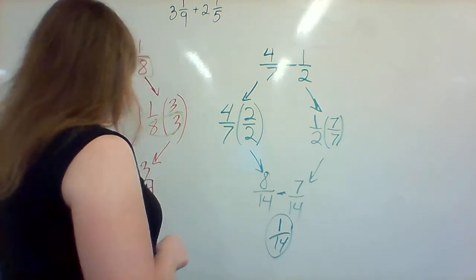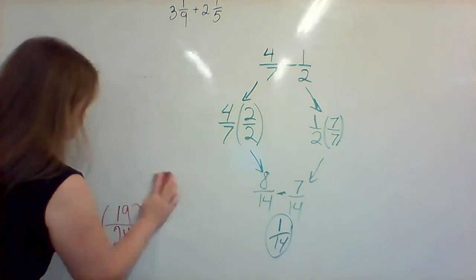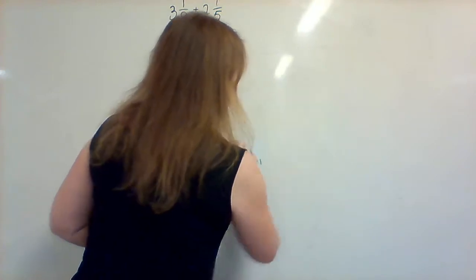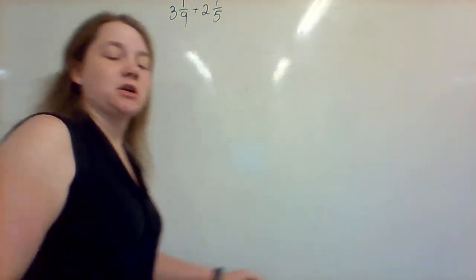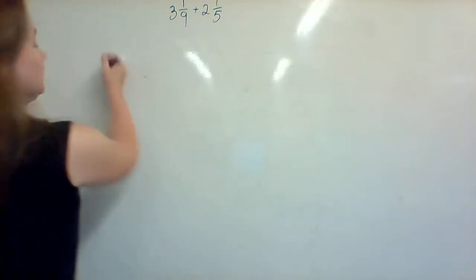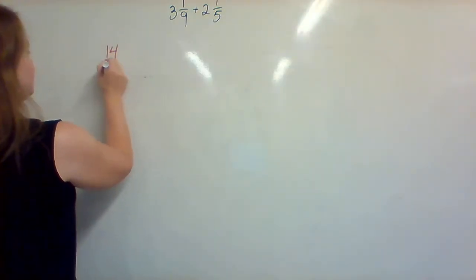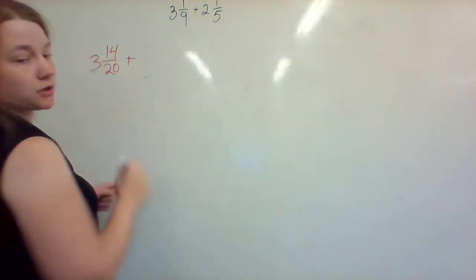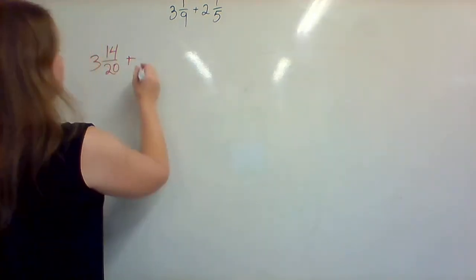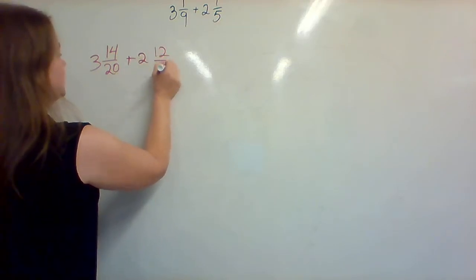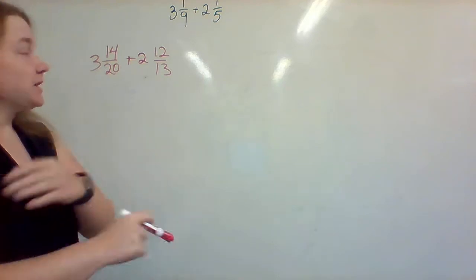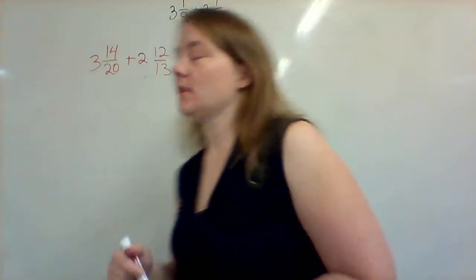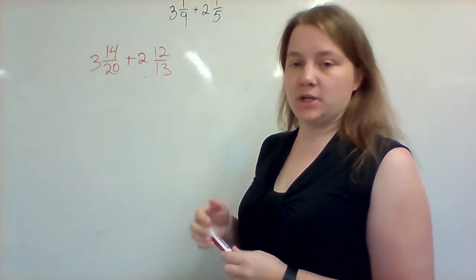Now we're going to look at 2 more examples. I'm going to start off this first example with something a little bit bigger. I'm going to start off with 3 and 14 over 20 plus 2 and 12 over 13. A couple things going on here. First of all, I'm going to look at 14 over 20 and see that 14 over 20 can be simplified.